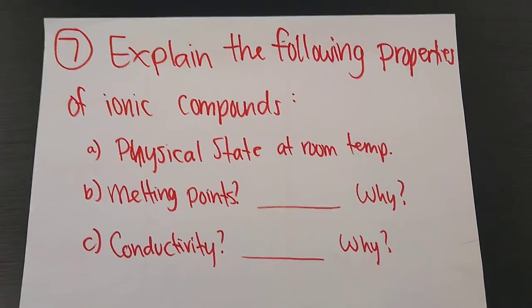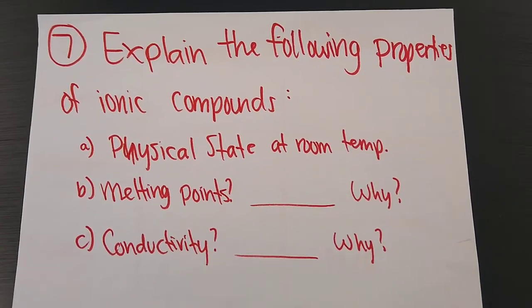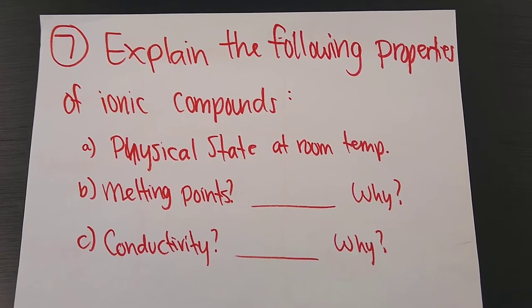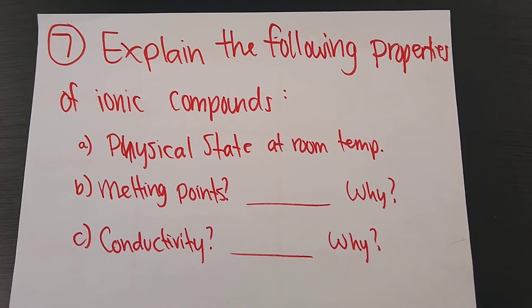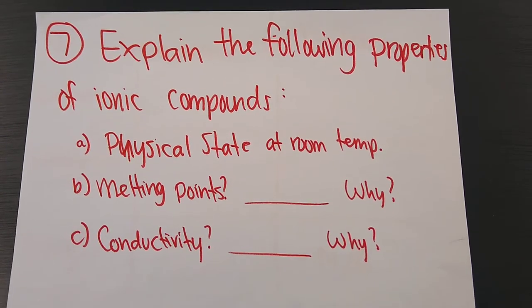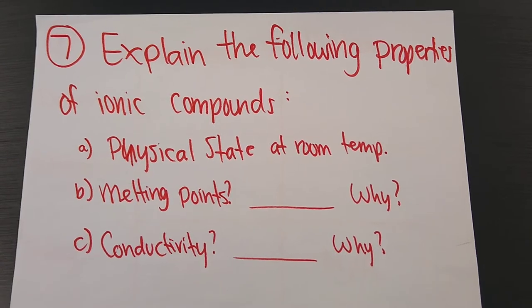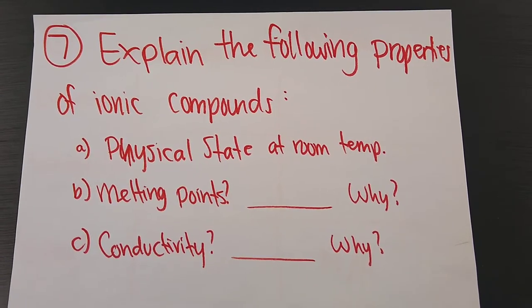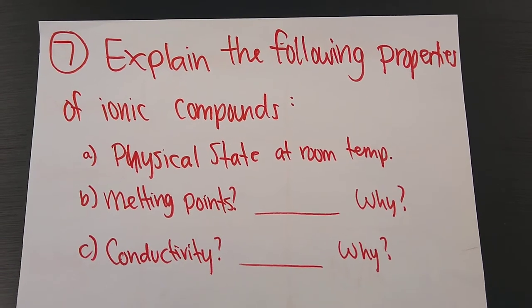Alright, seven, explain the following properties of ionic compounds. A, physical state at room temperature. B, melting points. Like what kind of melting points do they have? High or low? And why? C, conductivity. Can they conduct? When can they conduct? Why? Make sure you address all of those parts.